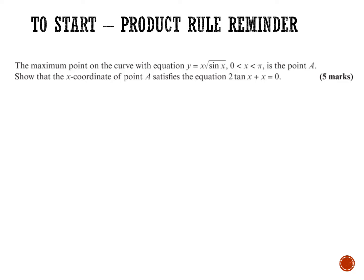When doing the product rule, we want to show our working by stating what u equals and what v equals. I'm going to write v as sine x to the half to make differentiation easier. So if u is x, then du/dx is 1. v is sine x to the half, which is a little more complicated because we're going to need to use the chain rule here.